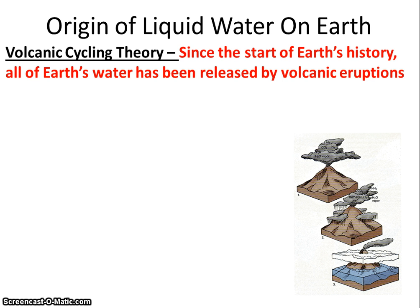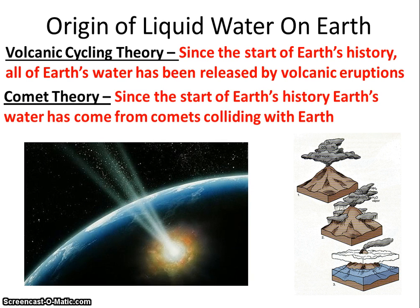That's the volcanic cycling theory — the idea that all of the water in the oceans originated from volcanic eruptions and tectonic activity. Now, that was basically the only theory of how water got into the oceans until the next one came up in about the 1980s. This is called the comet theory.